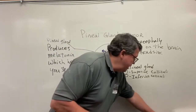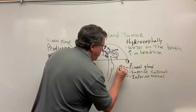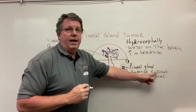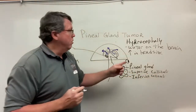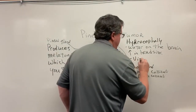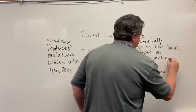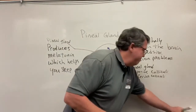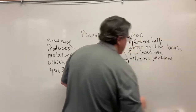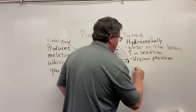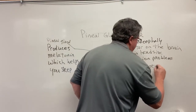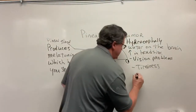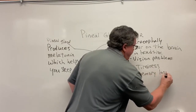Here's the problem with the penile gland when we have a penile gland tumor: as this grows, it's going to start to put pressure on the superior colliculi, and when it does, it will cause vision problems. So another symptom of this is vision problems — it's not uncommon to get vision problems from this. You can also get other problems such as tiredness, because of the fact that we're affecting the penile gland. Sometimes people get tiredness, memory loss, maybe seizures, and things such as that.